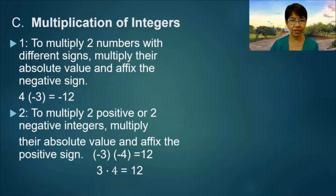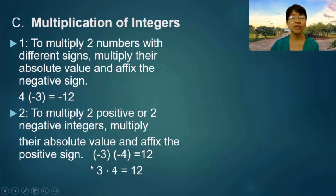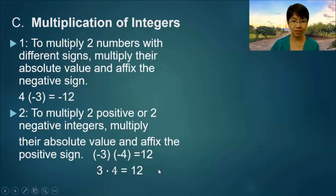Multiplication of integers. To multiply two numbers with different signs, multiply their absolute values and affix the negative sign. So 4 times negative 3 is negative 12. To multiply two positive or two negative integers, multiply their absolute values and affix the positive sign. Example: negative 4 times negative 3 is equal to positive 12. And 3 times 4 is also 12.